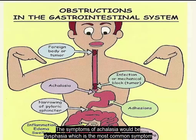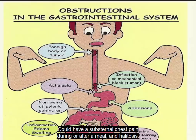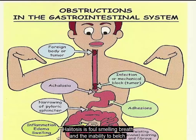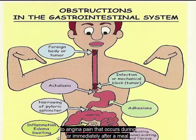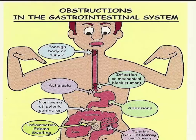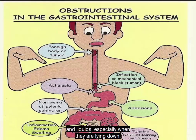The symptoms of achalasia would be dysphagia, which is the most common symptom, and difficulty with liquids and solids. There could be substernal chest pain during or after a meal, and halitosis, which is foul-smelling breath, and the inability to belch. Patients may also report a globus sensation or substernal chest pain similar to angina that occurs during or immediately after a meal. Patients with achalasia also report symptoms of GERD and regurgitation of sour-tasting food and liquids, especially when lying down.